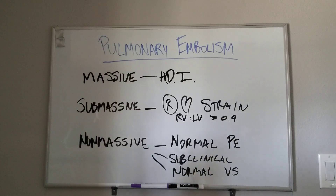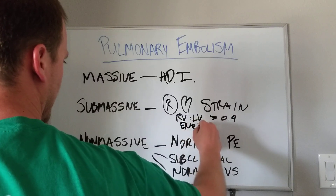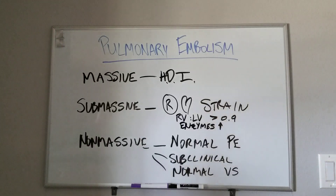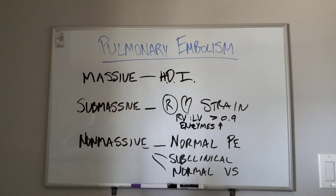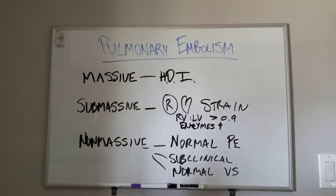Another way you usually see it first is your enzymes will take a bump. Everyone gets their rainbow labs when they come into the ED. They'll have troponinemia, elevated BNP, CKMB, things like that. You might also see an elevated D-dimer, which is very sensitive but not very specific. In any case, you see elevated enzymes.